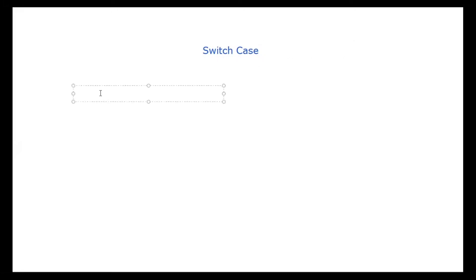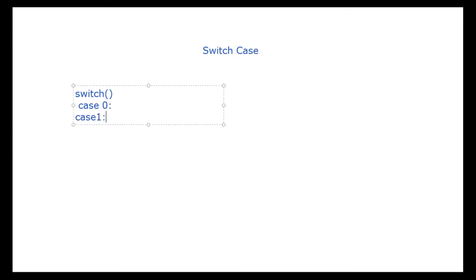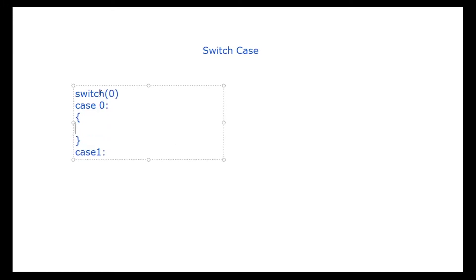In regular C language or Java language, the switch case is used for selecting different cases, similar to how we use an if-condition. You write a switch, and if the case equals zero you do one task, if the case equals one you do another task. In normal programming, if the value is zero, you implement the code in the case-zero block.